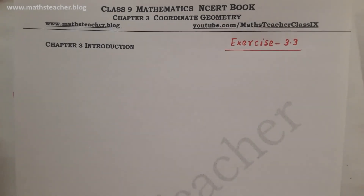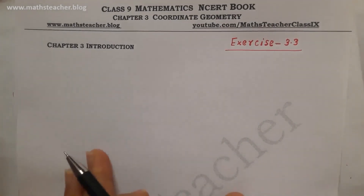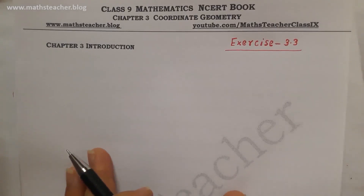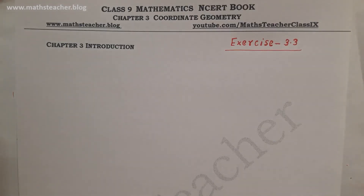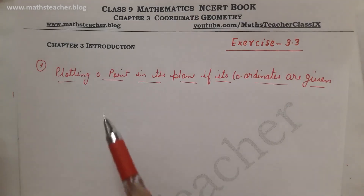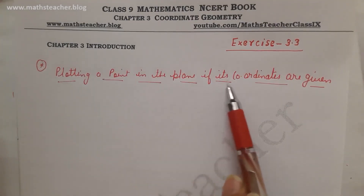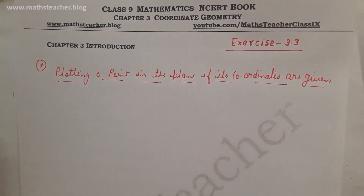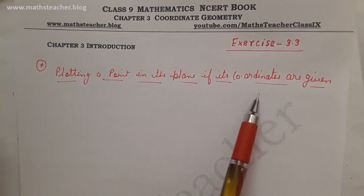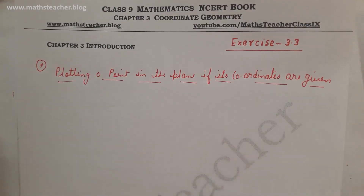This exercise is related to coordinates — if you have any coordinates given, how do you plot them in the graph? For example, if you are given (2, 5), how do you plot it in the graph? We will learn about coordinates and how to plot them. Our topic is: plotting a point in a plane if its coordinates are given. Let's take an example.